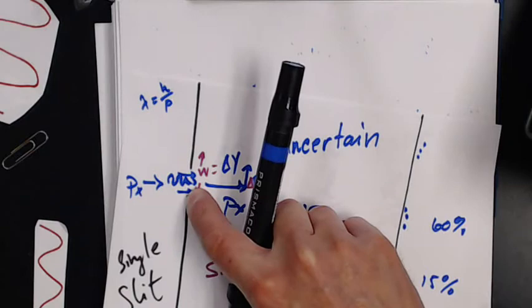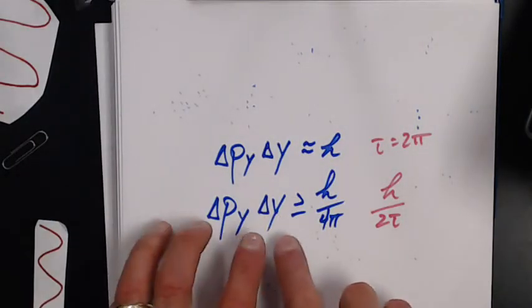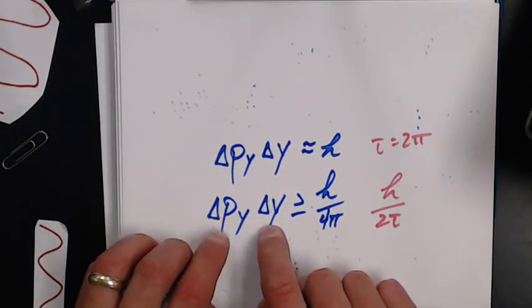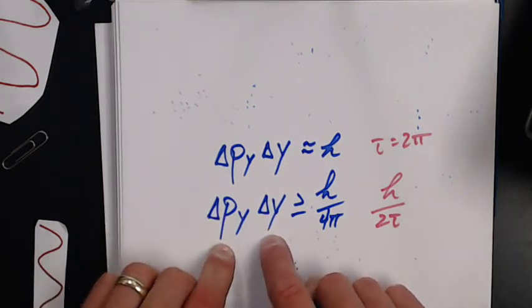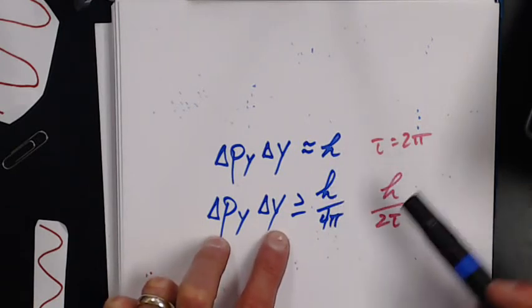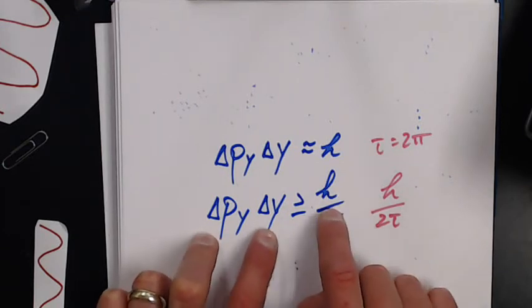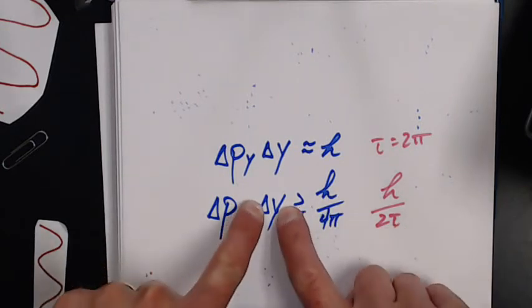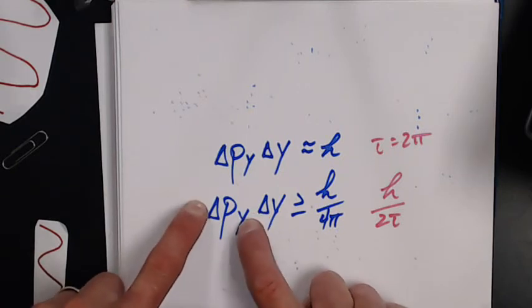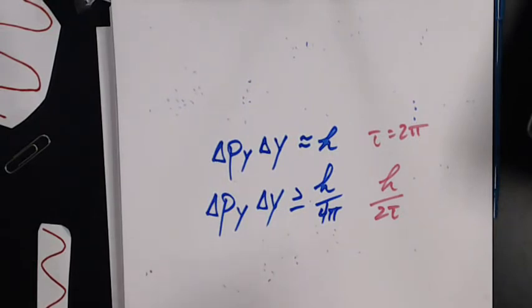What does this mean? There's a minimum value for where I can find out what direction this thing is going or where it is. As I know more and more, as these numbers get smaller, there's a minimum value they can reach and that's h over four pi or h over two tau. What does that mean? Eventually I'll reach a point where if I know so much about where it is, I have to know less about where it's going. If I know a whole lot about where it's going, I know less about where it is.